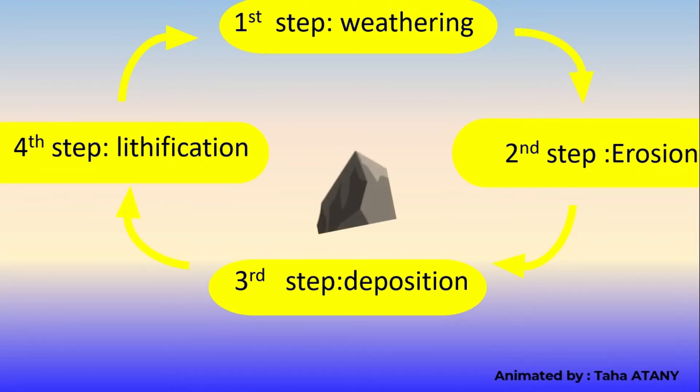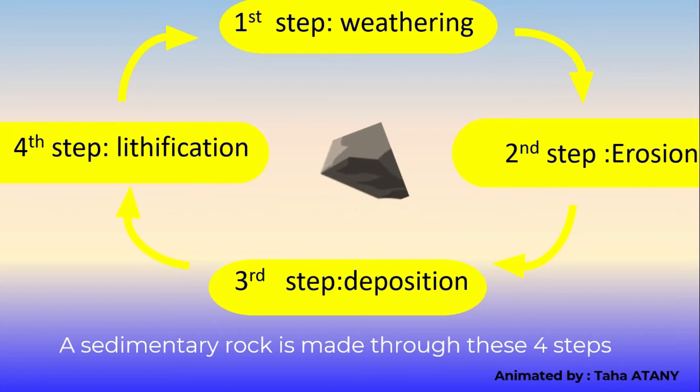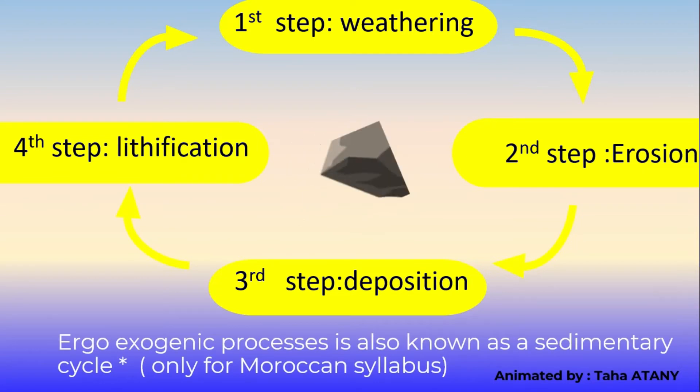This rock is known as a sedimentary rock, one of the three main types of rocks that exist on our planet. So we have weathering, erosion, deposition, and lithification. They are known as exogenic processes in our sedimentary cycle for the Moroccan syllabus, and they shape our landmass through millions of years.